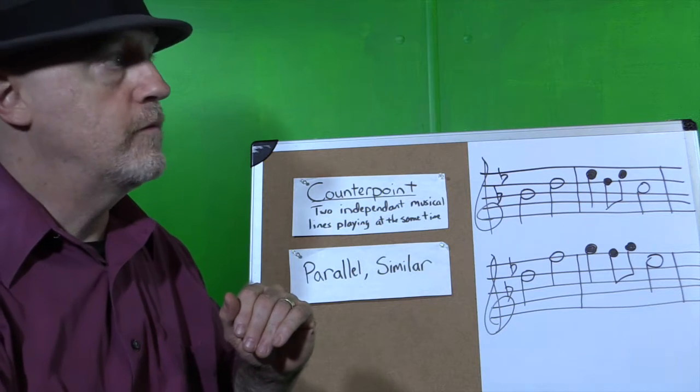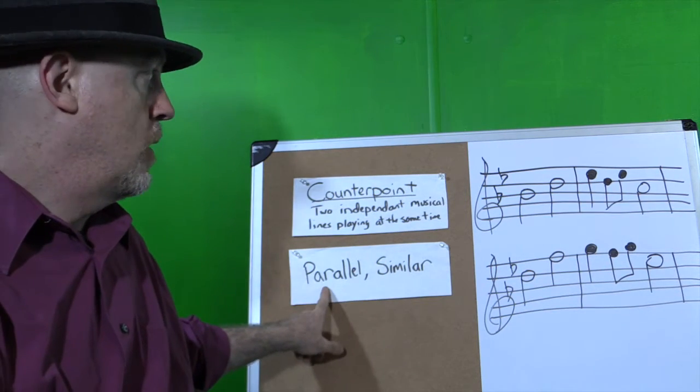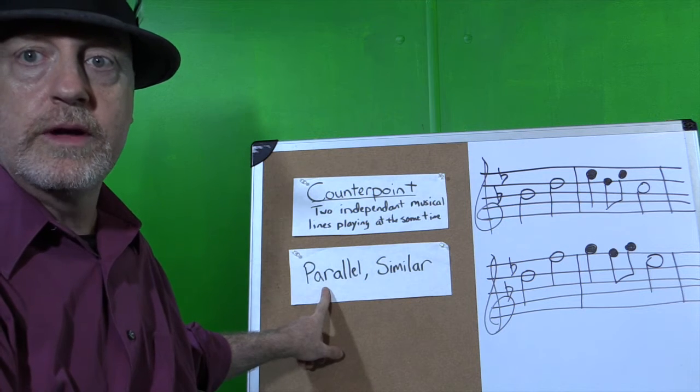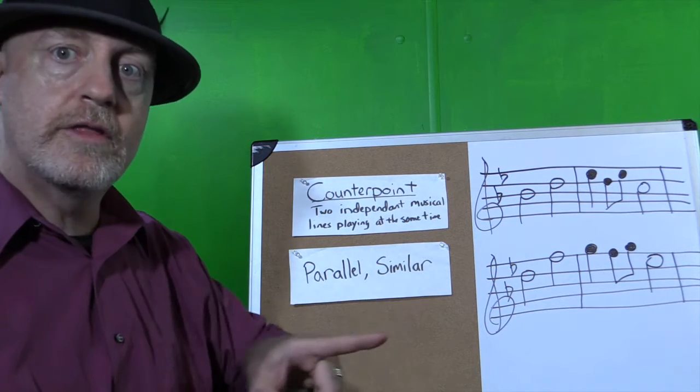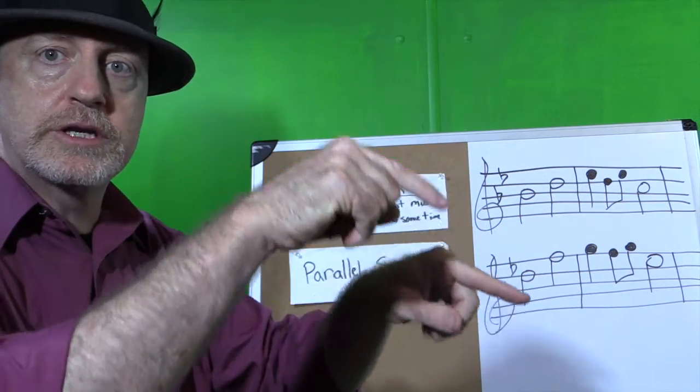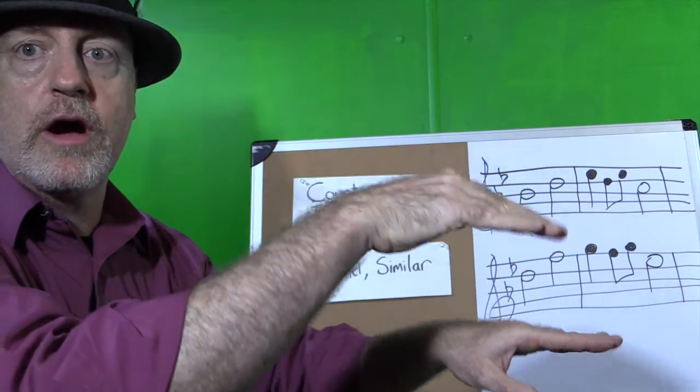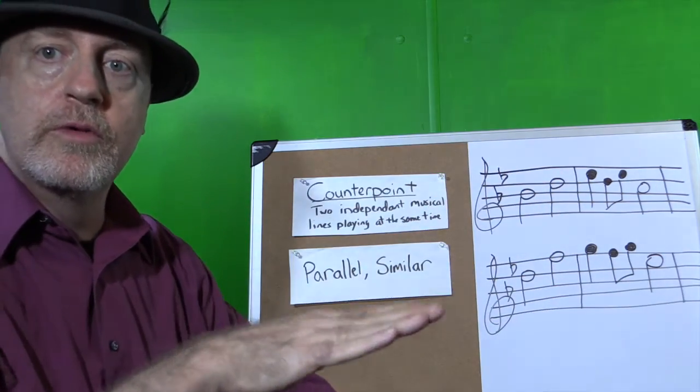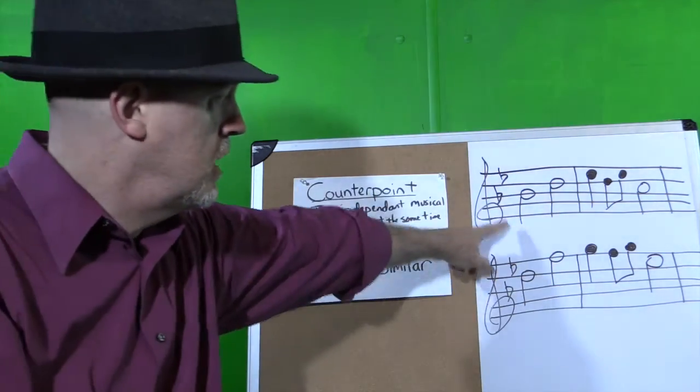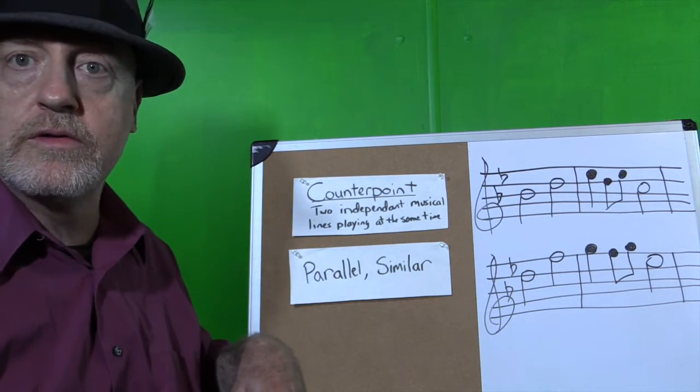So the first way I want to talk about is when two different lines are moving parallel to each other. So basically they're moving in the same direction all the time and they're never really crossing each other. One line isn't going lower than the other or higher than the other. They're moving the same way. And you can see in these two lines that's exactly what's happening.